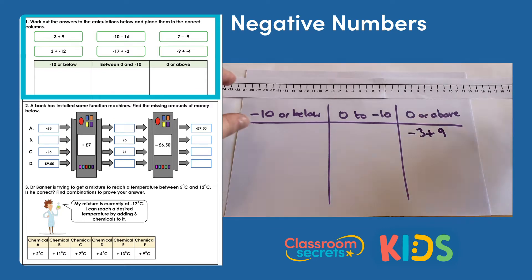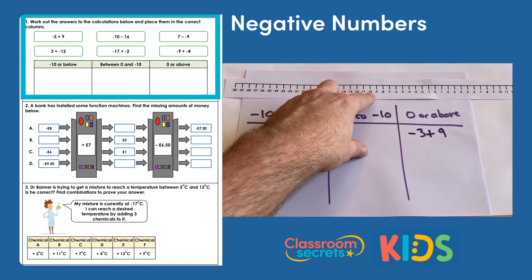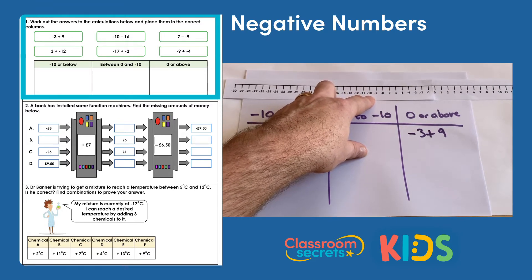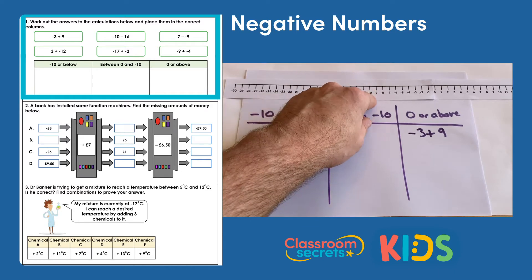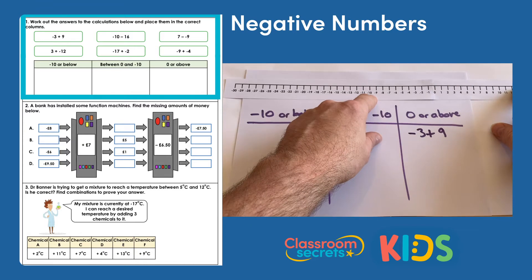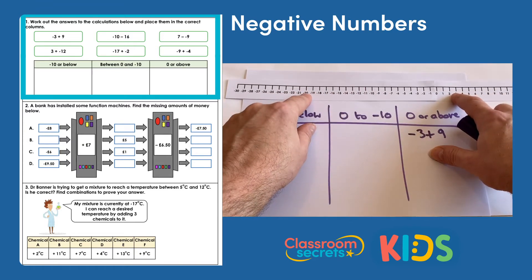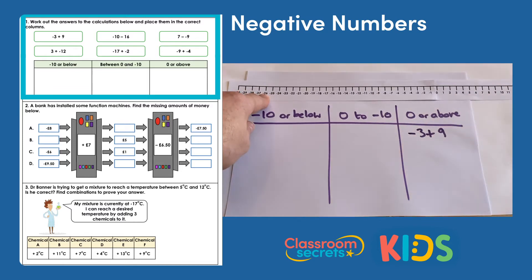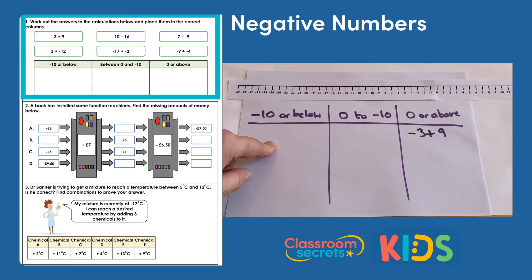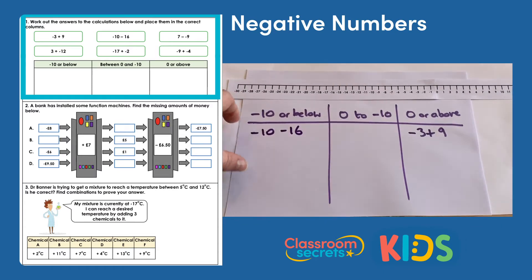The next one is negative 10 take away 16. Starting at negative 10, we are taking away a positive value, so that's a takeaway. One jump of 10 takes us to negative 20, then take away 6 more brings us to negative 26. So negative 10 take away 16 goes in the negative 10 or below column.